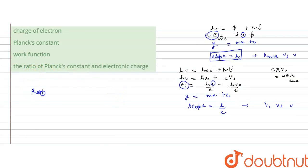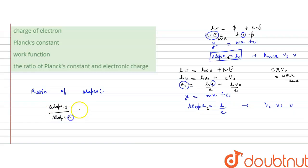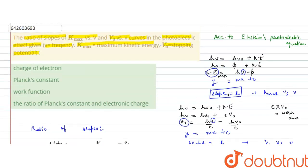Now we calculate the ratio of the slopes. Denoting slope 1 as h and slope 2 as h/e, the ratio is slope 1 divided by slope 2 equals h divided by (h/e), which simplifies to e — the charge of the electron. So the correct answer is option A: charge of the electron.